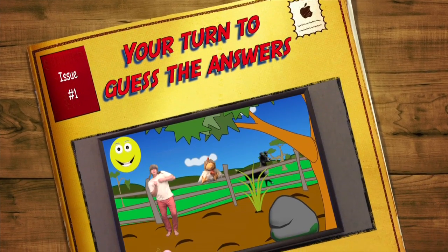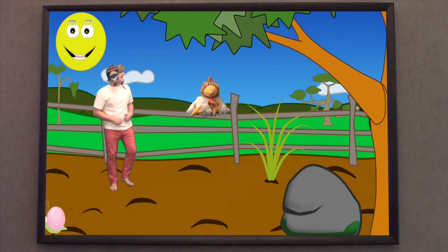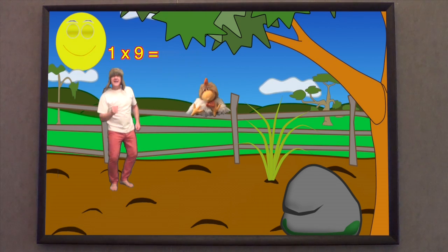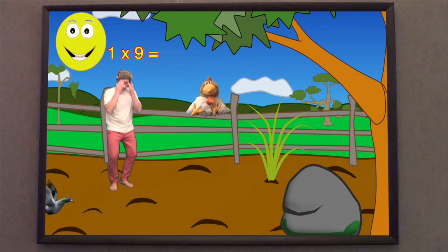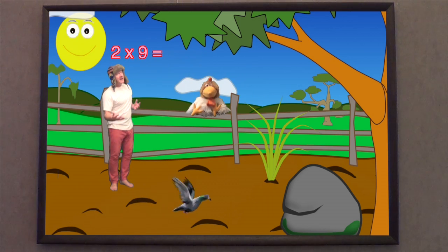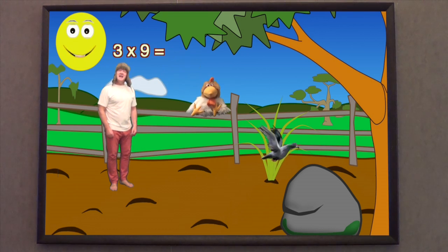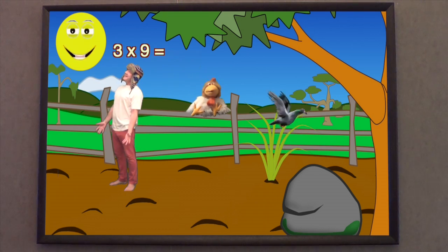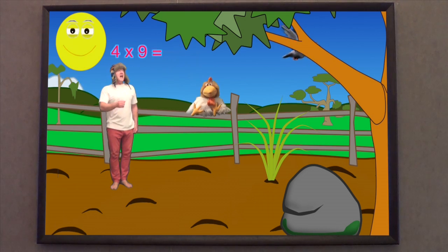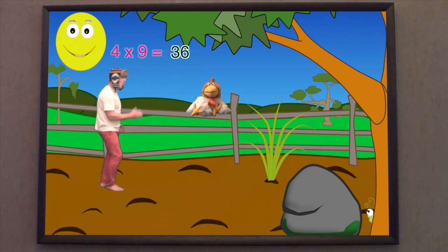Oh, Jingle Jeff, that was really good fun! But this time everybody at home has to guess the answers! One times nine is... Nine. Two times nine is... Eighteen. Three times nine is... Twenty-seven. Four times nine is... Thirty-six.